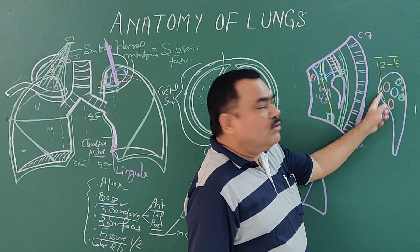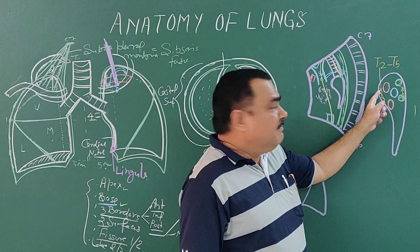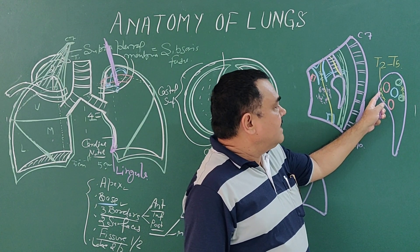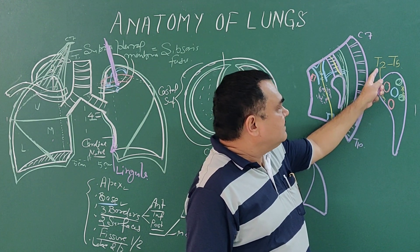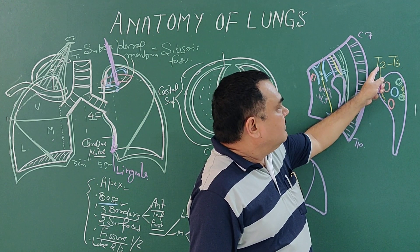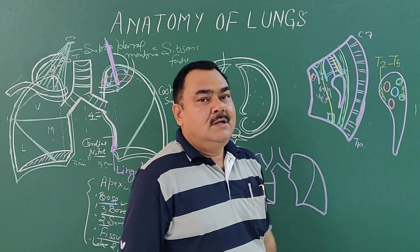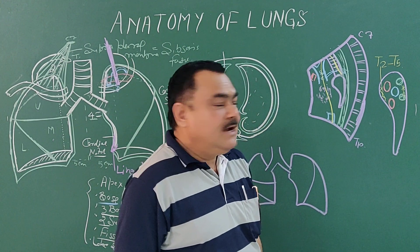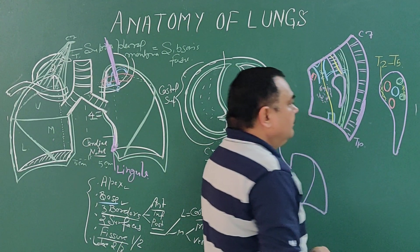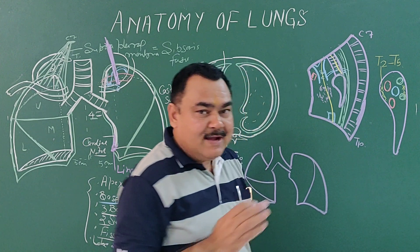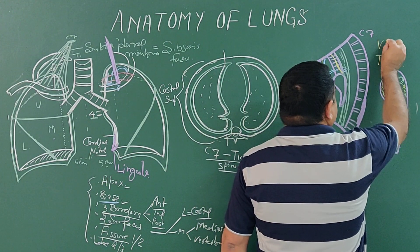This is the pulmonary plexus. Parasympathetic and sympathetic fibers are here. Sympathetic fibers come from the T2 to T5 segment, and parasympathetic fibers come to the vagus.